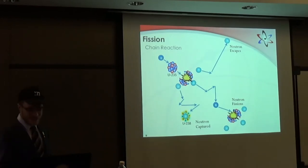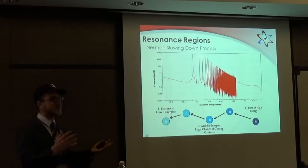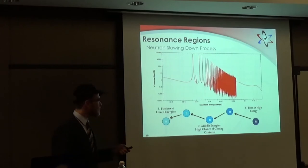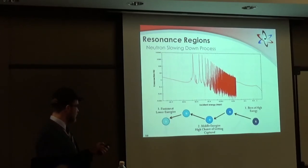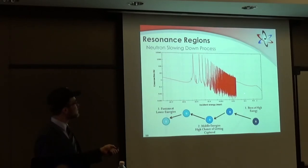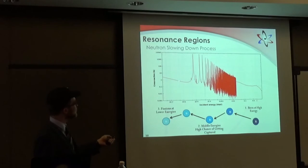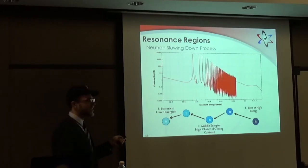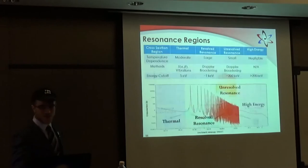Cross-sections are basically a measurement of what's the chance that an event is going to happen — what's the chance a neutron is going to get absorbed in the fuel? When a neutron is born it's at a very high energy and has a very low chance of getting absorbed. It bounces around and loses energy, and it usually fissions in the lower energy region. In the middle energy areas we have interesting peaks called resonances. These are key to the Doppler feedback, and how they react to temperature specifically is what makes them work so well.